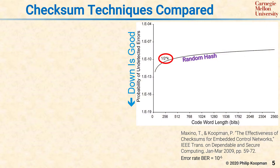Checksums are a specific error coding technique that is relatively cheap to compute and provides reasonable coverage for some situations, but is limited to low Hamming distances. We'll go through the usual suspects for checksum computations and explain the differences and their capabilities. As a baseline, consider this chart of probability of undetected errors with codeword length. The 1 over 2 to the k line is a theoretical anchor point against which we can compare other error detection codes.